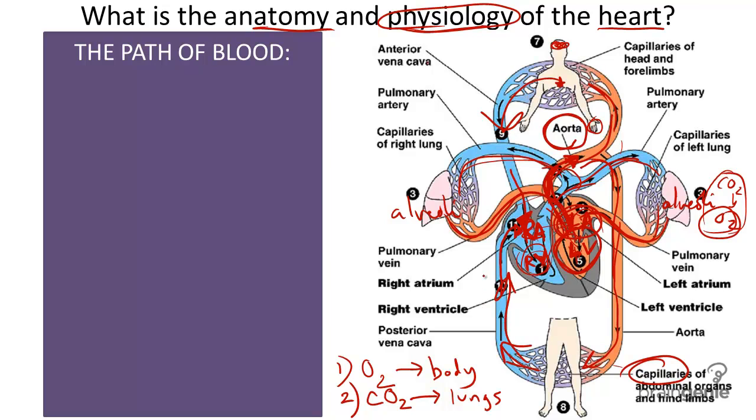This blood hitches a ride through the inferior, meaning the bottom half of the body, and then through the superior vena cavas, these major veins that carry deoxygenated blood. And they travel back to the right atrium to be pumped once again back to the lungs. And the cycle repeats itself about 100,000 times per day.